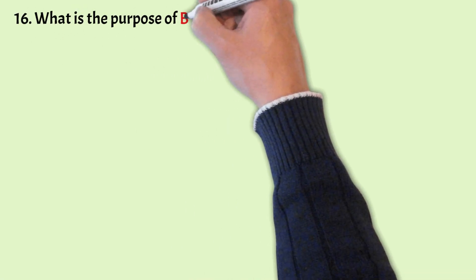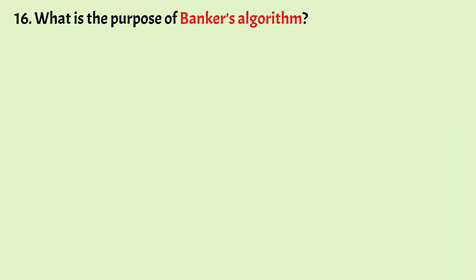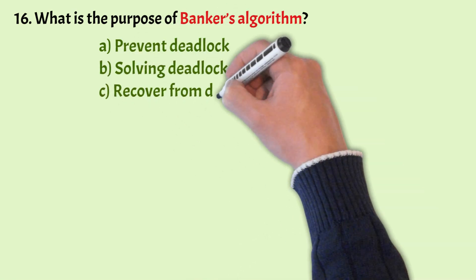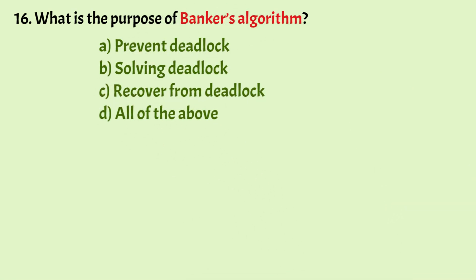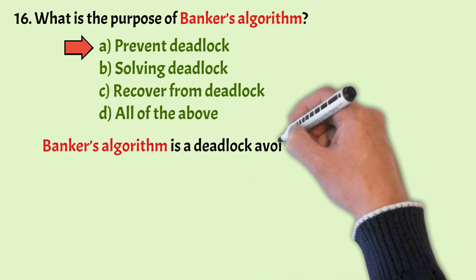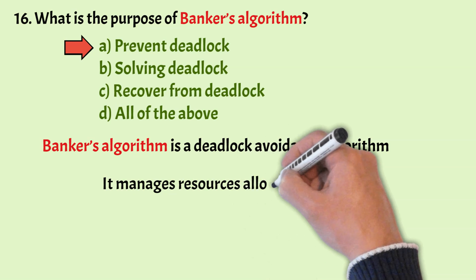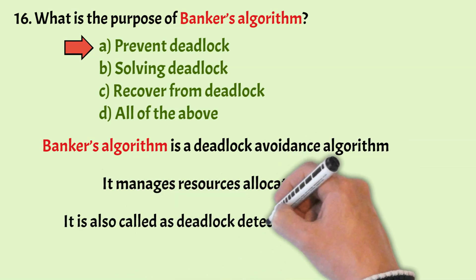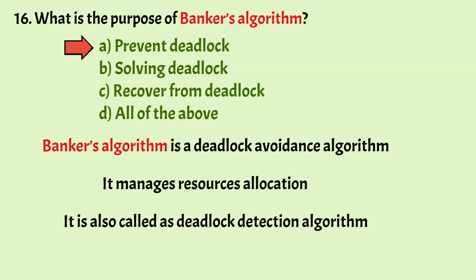What is the purpose of Banker's Algorithm? Options: prevent deadlock, solving deadlock, recover from deadlock, all of the above. The correct answer is Option A, prevent deadlock. The Banker's Algorithm is a deadlock avoidance algorithm that manages resource allocation. It is also called a deadlock detection algorithm. It is named Banker's Algorithm because banks use the same technique to allow money and provide loans to customers so they never run out of money.